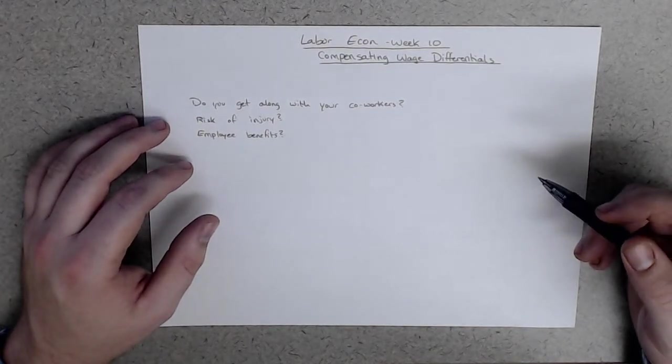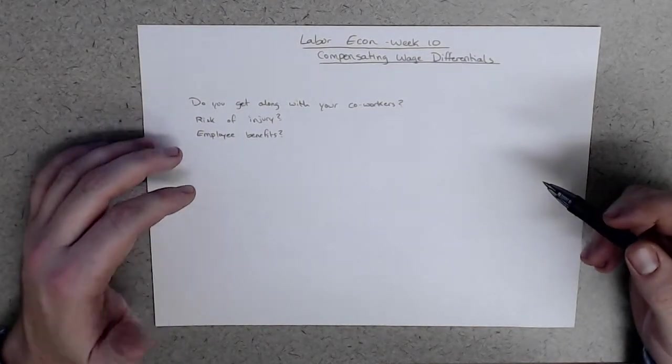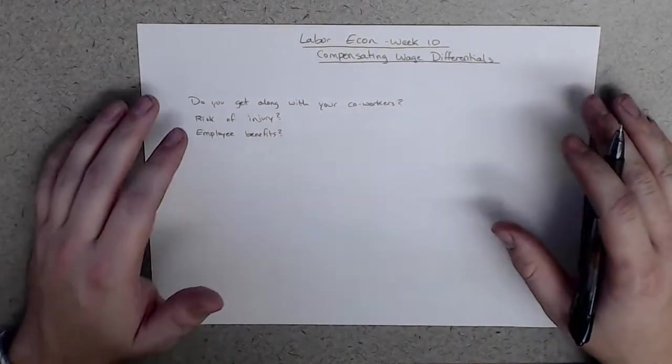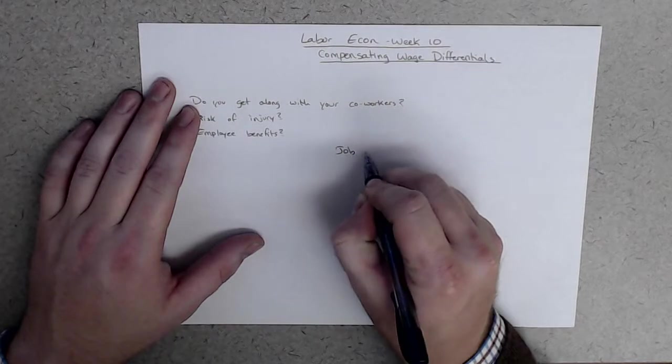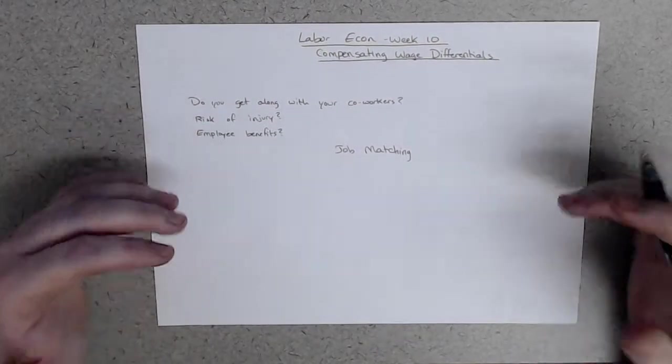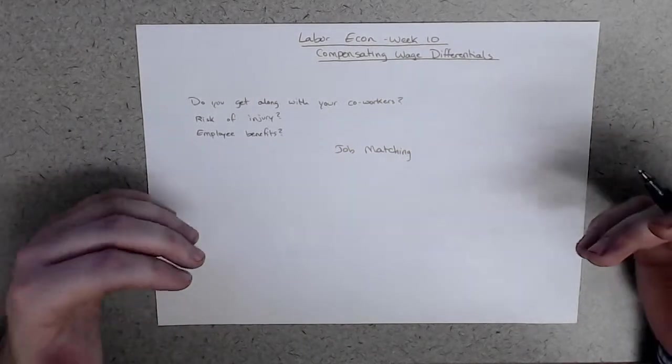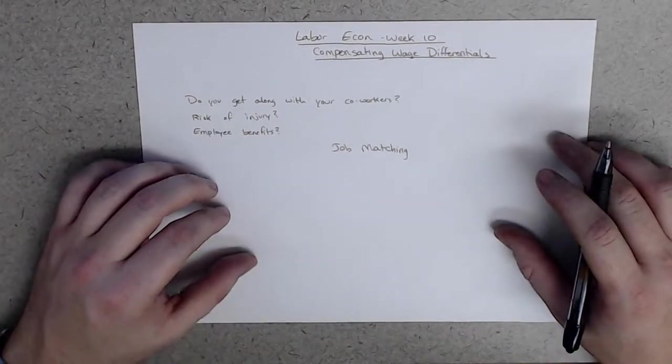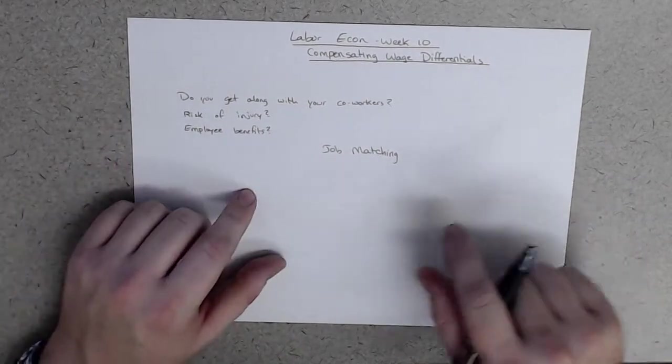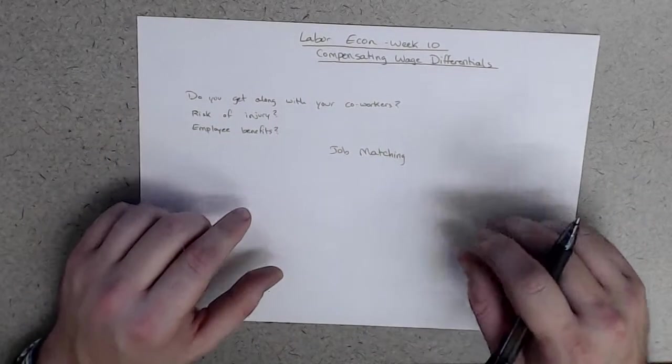We'll also be discussing job matching and the role of worker preference and information. If you think about it, when I say job matching, it sounds like this is sort of an active process where there is someone there saying, okay, Susie, you go here and Billy, you go over here. And Jane, you come over here with Billy and Bobby, you go with Susie.